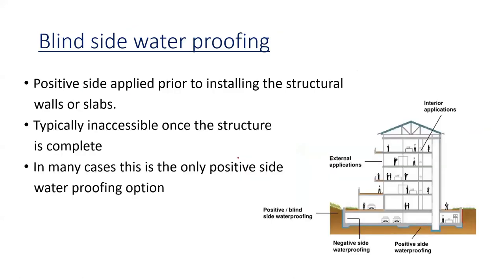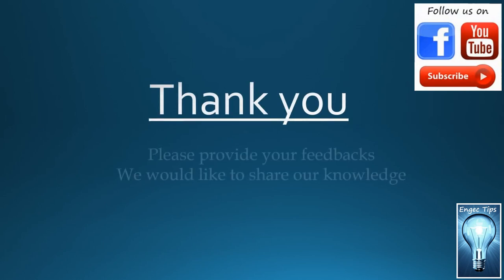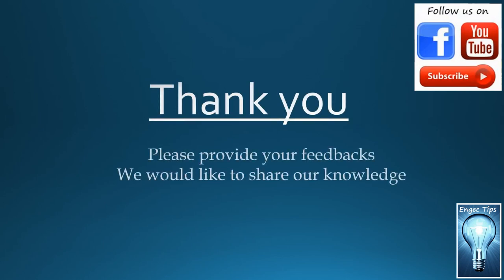Blind side waterproofing is a kind of positive side waterproofing. As you can see in this figure, it is typically inaccessible once the structure is completed — we cannot access that waterproofed area after construction. That is why we must do the waterproofing correctly with best practice. Otherwise, if rectification is needed, we have to do it from the negative side, as we cannot access the blind side area.